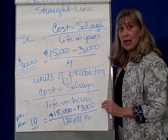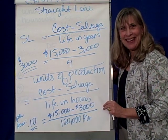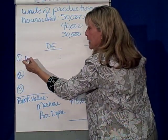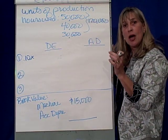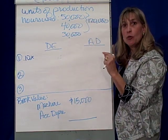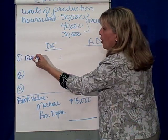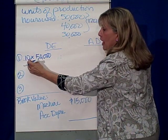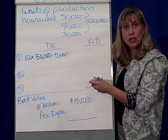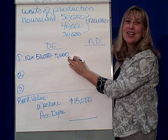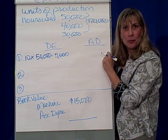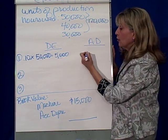What we then do is make the depreciation entry at the end of each year. In year one, we're going to take 10 cents — our depreciation amount per hour — and multiply it by the actual hours we worked. In year one, we used the machine 50,000 hours, so that's $5,000 of depreciation. We debit depreciation expense and credit accumulated depreciation for $5,000. The balance in accumulated depreciation at the end of year one is $5,000.